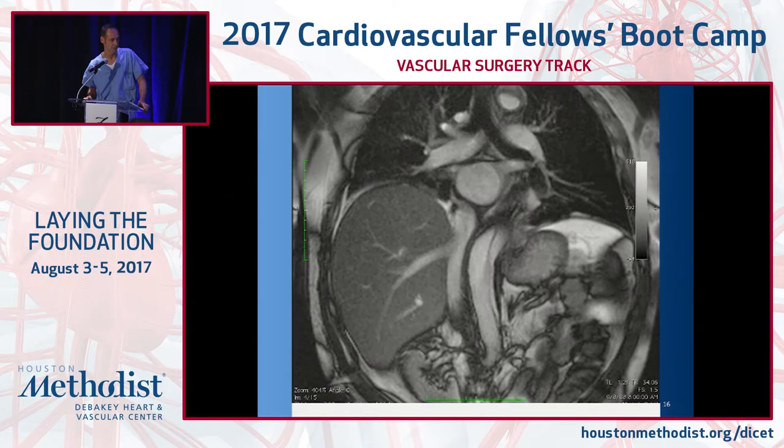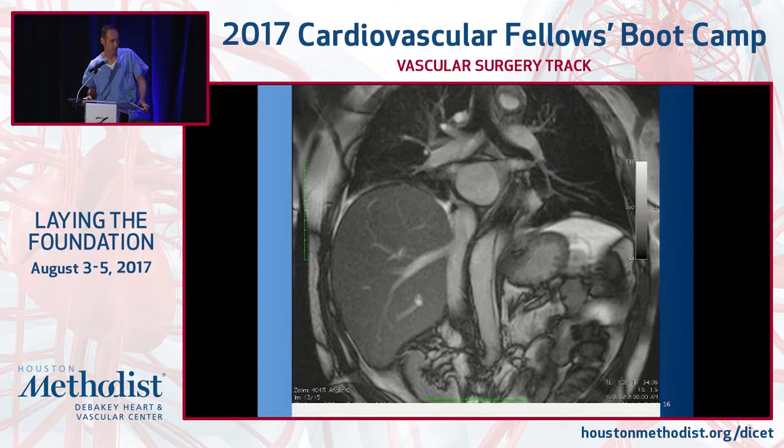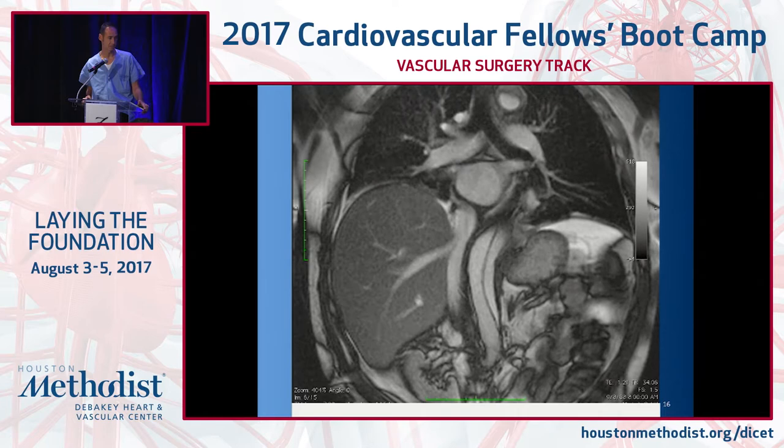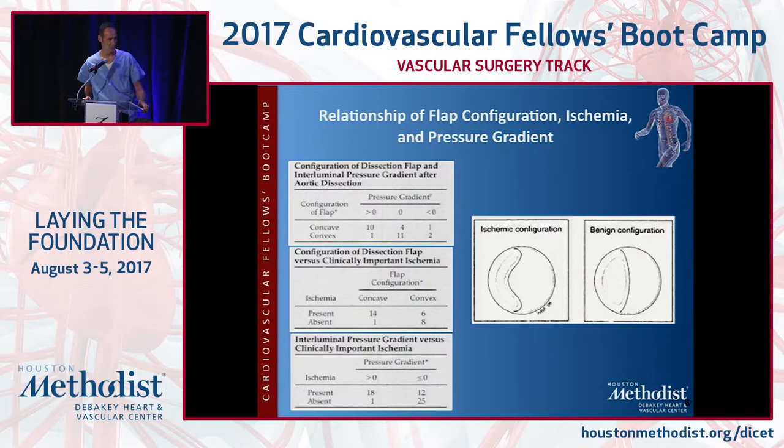The aorta is an organ like any other, and there's something happening all the time. This can change quickly as these dissections evolve, sometimes over hours to days. Based on imaging criteria, there are essentially two basic components: ischemic and benign configurations for dissections — just something to keep in mind when looking at your imaging.